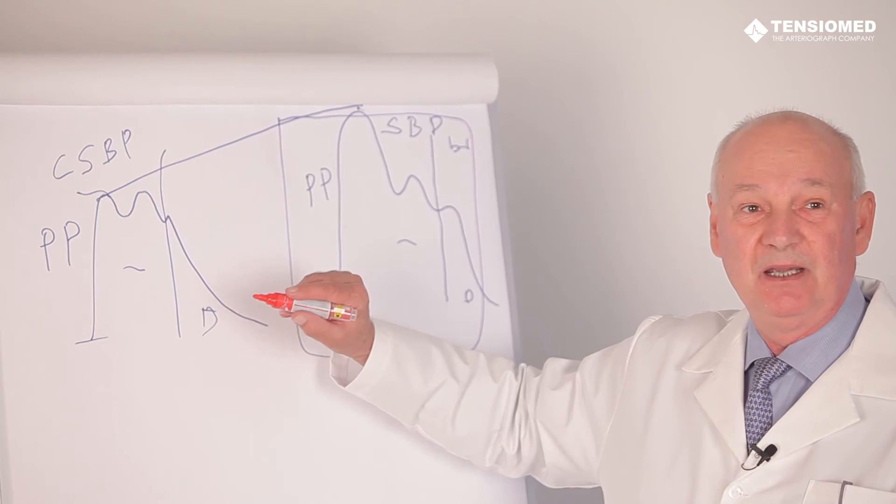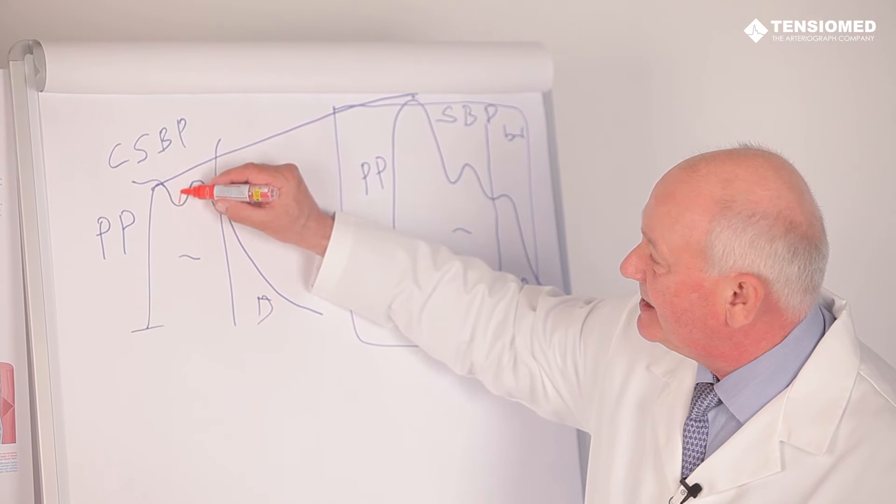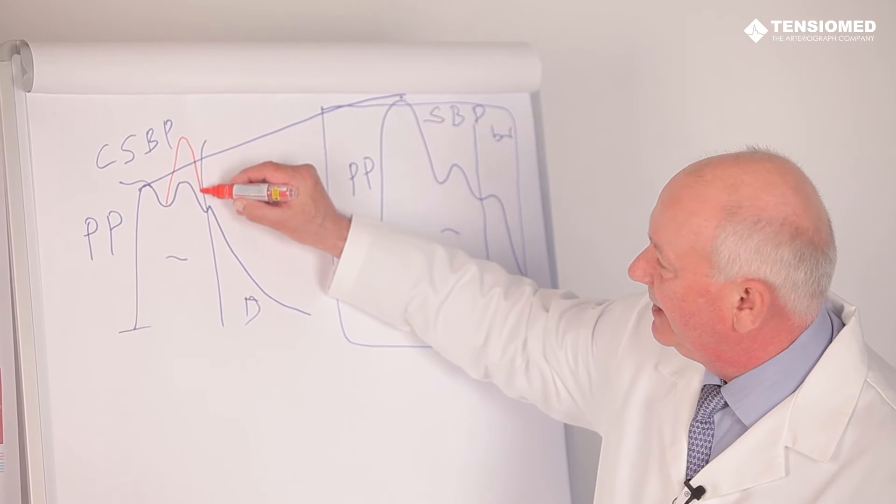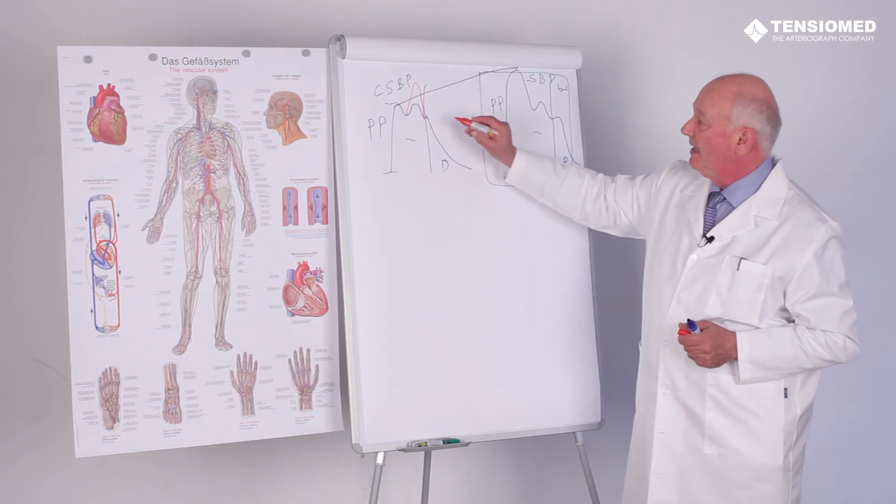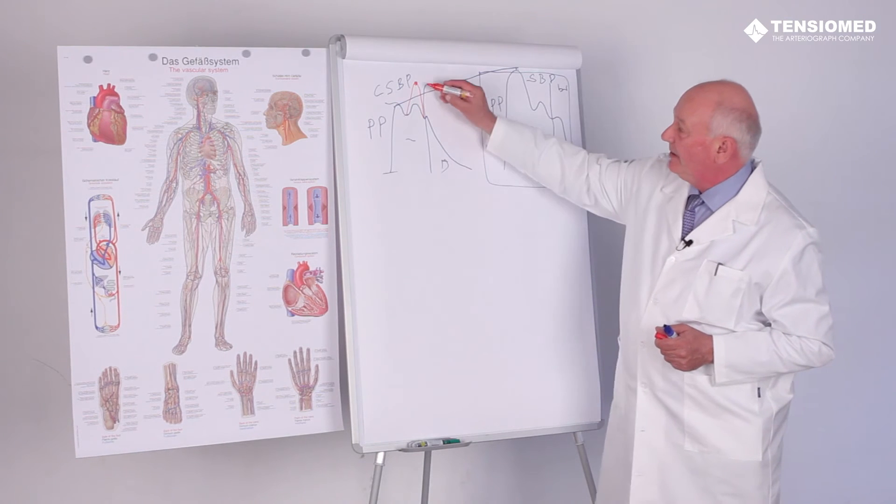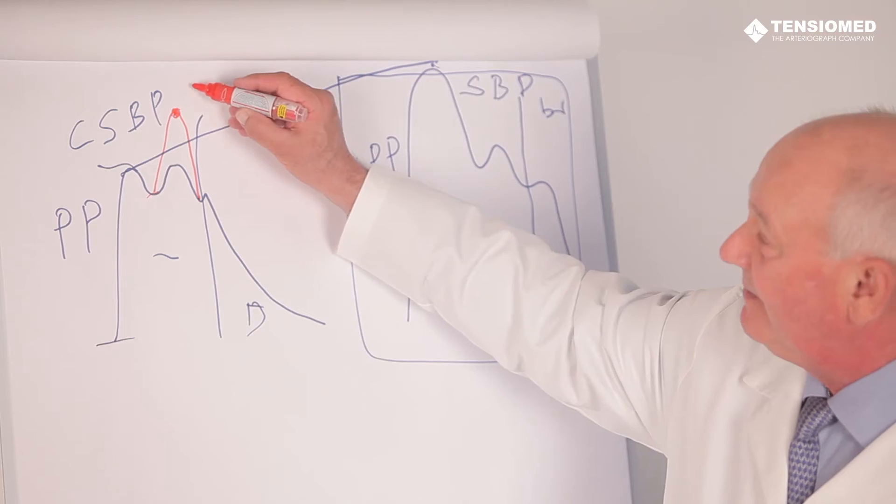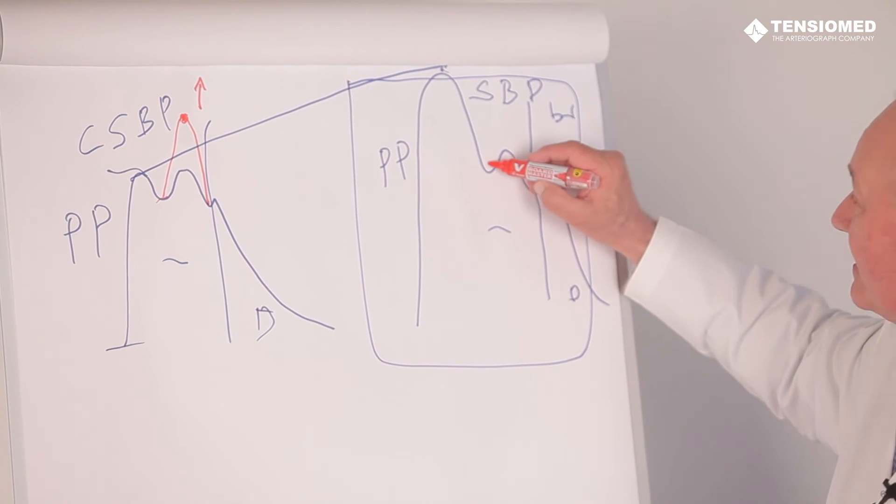The reflected systolic wave amplitude will increase due to the increased energy of the reflected wave. In this case, the highest pressure in the aorta occurs with the second reflected wave, and the central systolic blood pressure will increase. However, this proportional increase cannot be detected at the brachial artery.